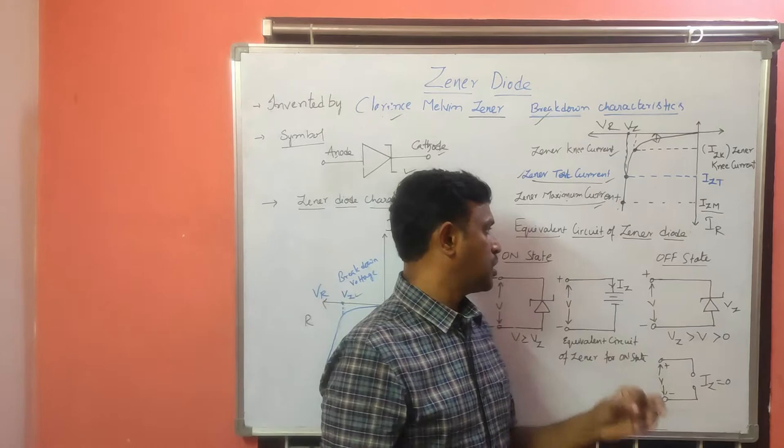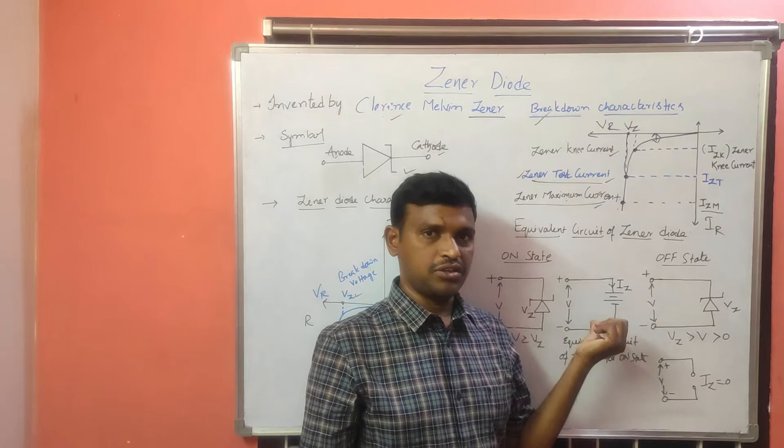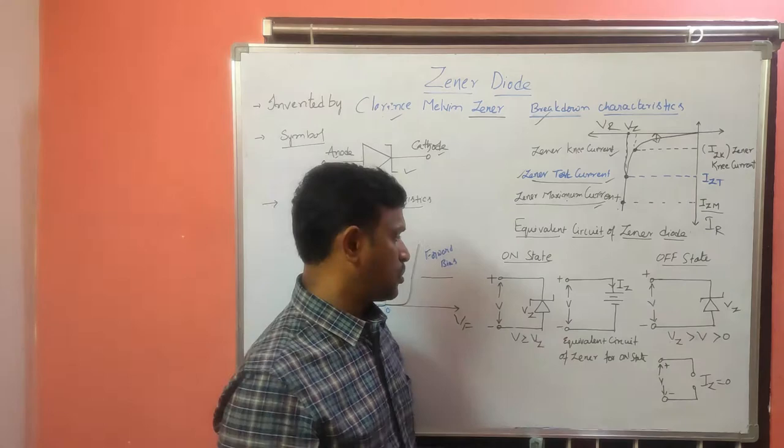If we consider the ON state, VZ is the GINA breakdown voltage given in the manufacturer specifications. Here the negative terminal is connected to the anode and the positive terminal is connected to the cathode, so this is in reverse bias condition. The DC voltage connected has its negative terminal at the anode and positive terminal at the cathode.